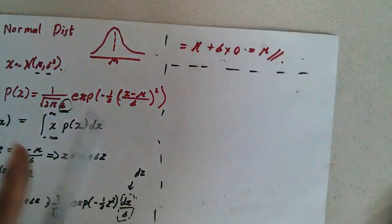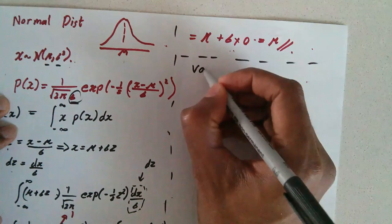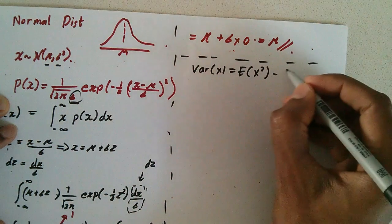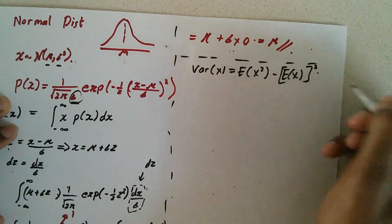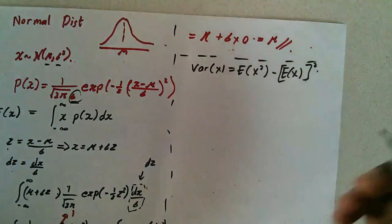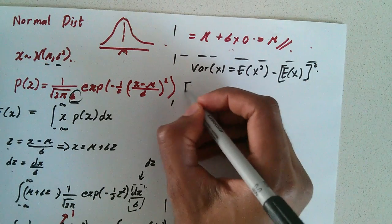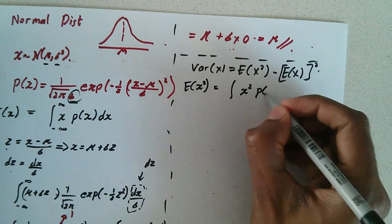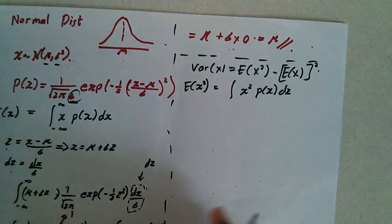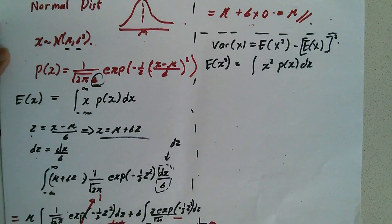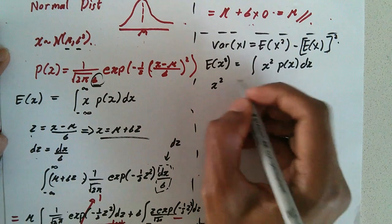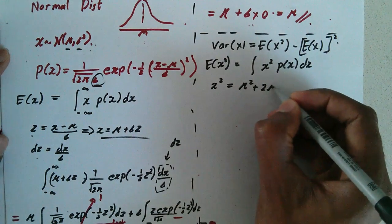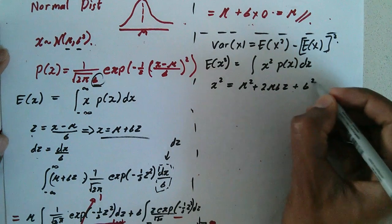The next part is finding the variance. To find Var(X) I'll use the formula Var(X) = E[X²] − (E[X])². This is a standard result. The first thing needed is E[X²], which is the integral of x² · p(x) dx. Using our substitution, x² expands to mu² + 2·mu·sigma·z + sigma²·z².